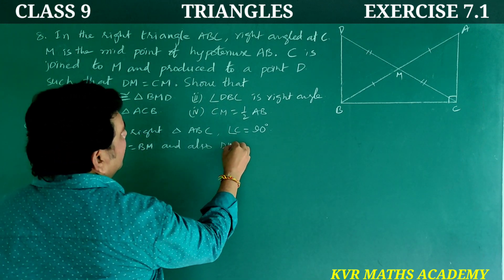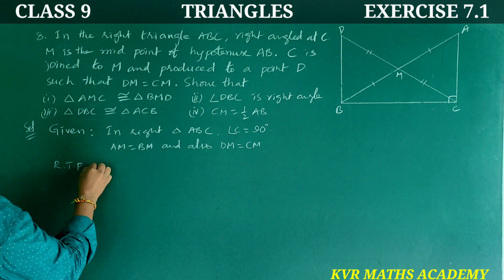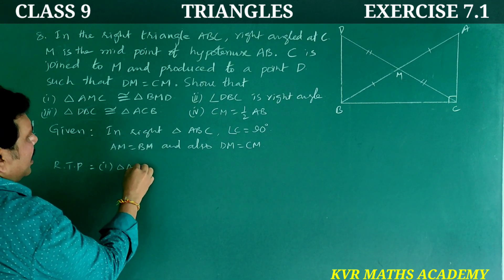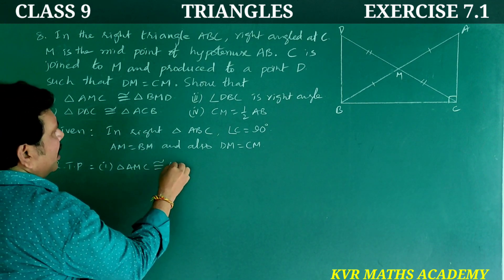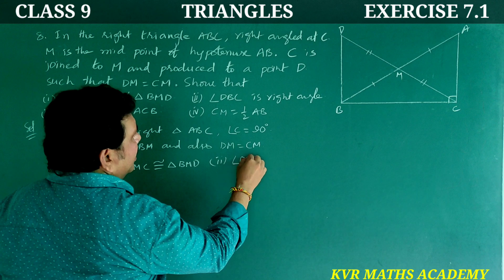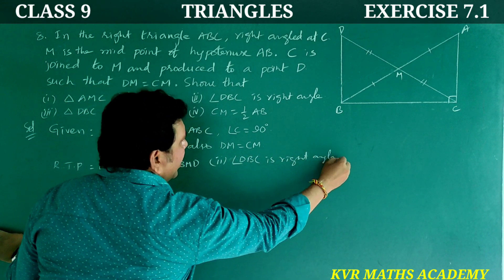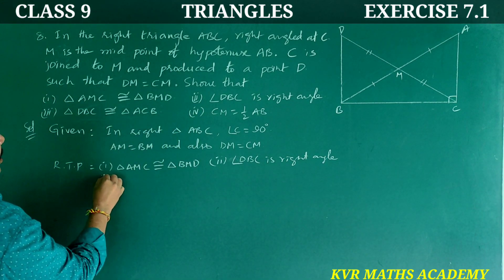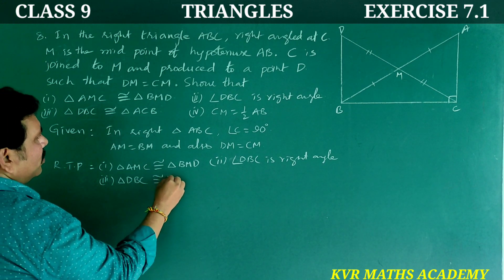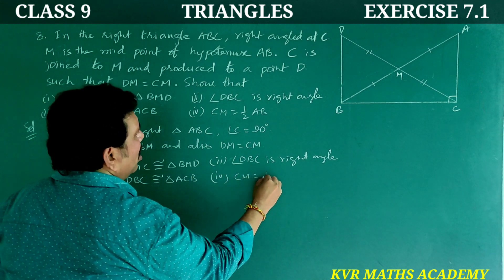To prove: (1) triangle AMC is congruent to triangle BMD, (2) angle DBC is a right angle, (3) triangle DBC is congruent to triangle ACB, and (4) CM is equal to half AB.